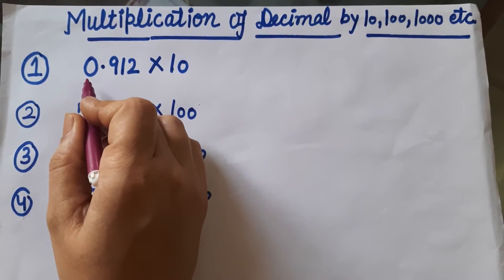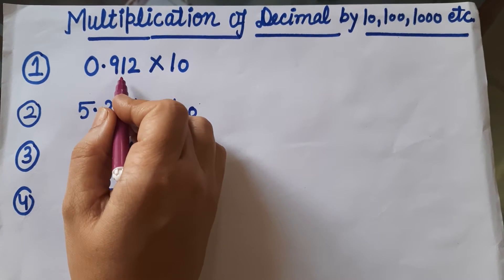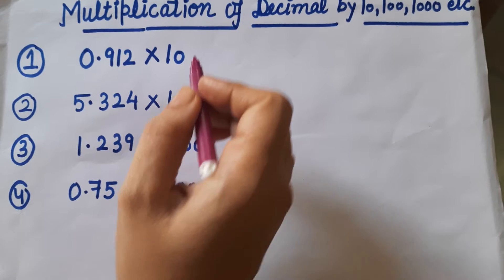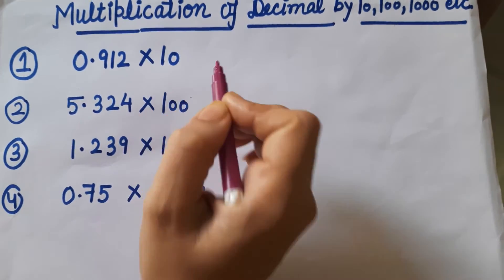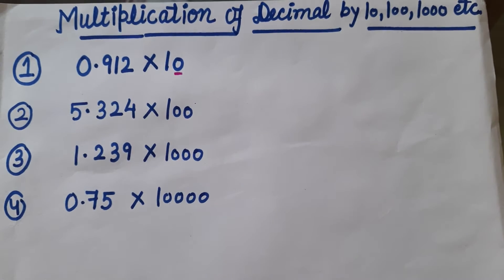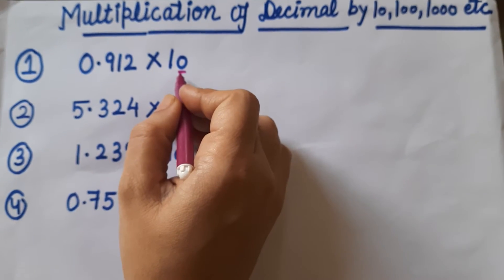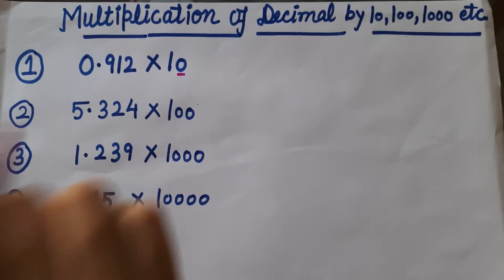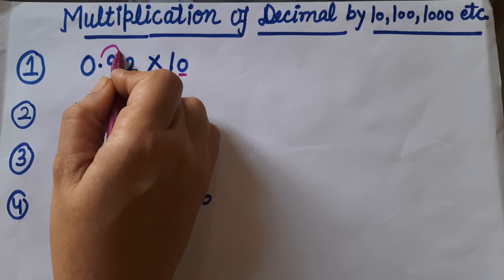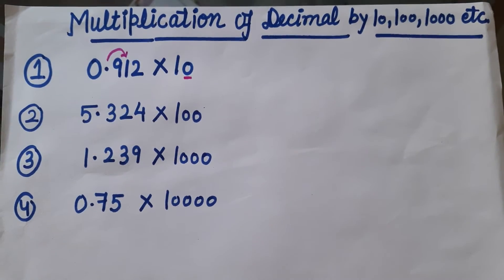My first question is 0.912. When I multiply with the number 10, first step we have to count the number of zeros with the 1. Here is the 1 and 0, means the number 10. So what we will do? We will shift this decimal to the right side.